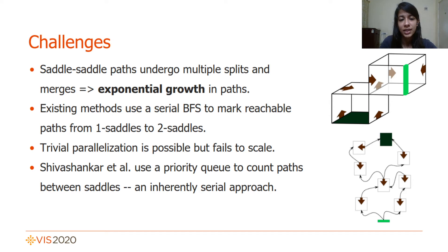To zero in on the challenges encountered in step 3, consider the directed acyclic graph that represents the collection of paths between all 1-saddles and 2-saddles. An example of this DAG is shown in the 3D grid setting on the right, with the dark green cell represented by a 2-saddle and the light green cell corresponding to a 1-saddle. The paths between these 1-saddle pairs undergo multiple splits and merges as shown, which leads to an exponential growth in the number of paths.